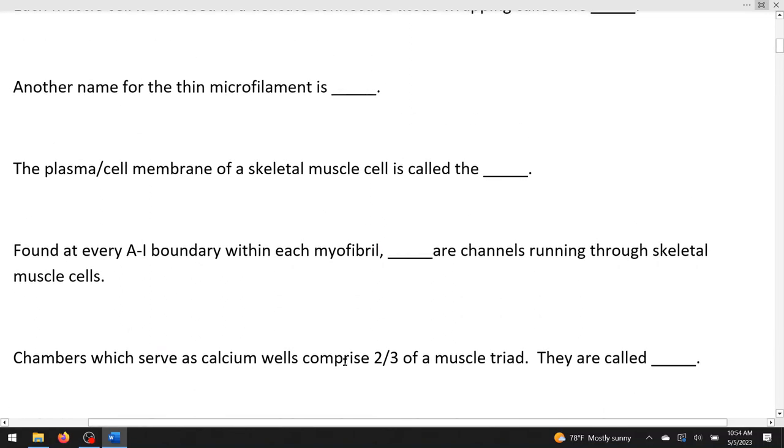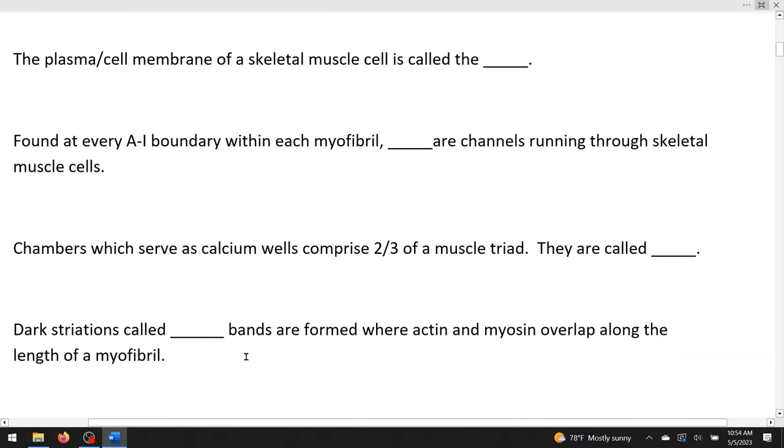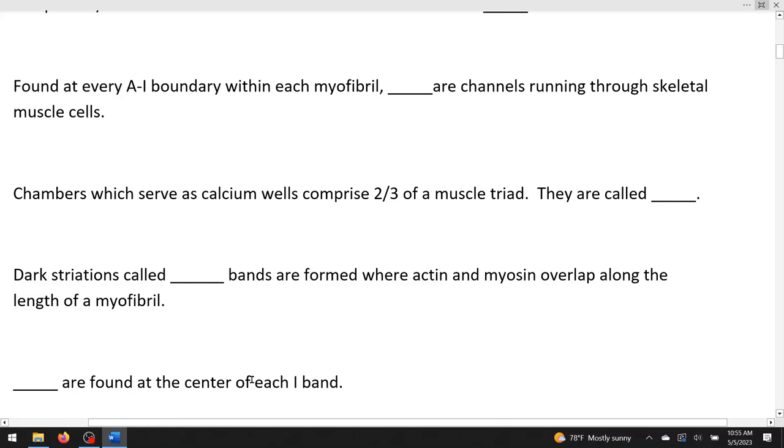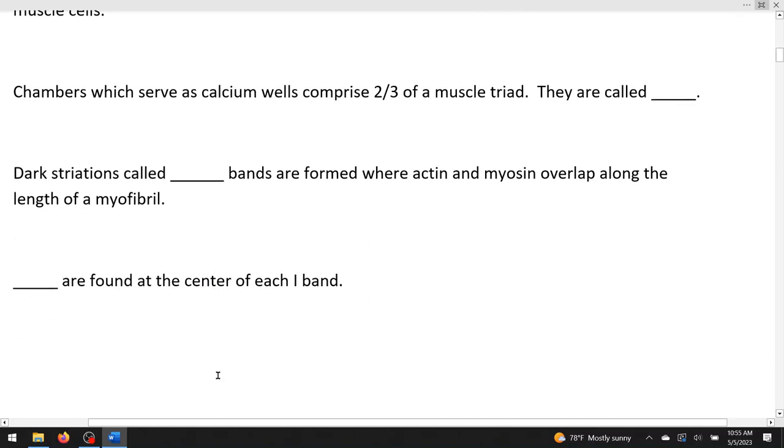Chambers which serve as calcium wells comprise two-thirds of a muscle triad. So what are the parts of a triad? Well, it's going to be these T-tubes we just talked about in this question, plus the two cisternae that are on either side. Those are where we find the calcium stored. So the two-thirds of the triad that store calcium are cisternae. Dark striations called blank bands are formed where actin and myosin overlap along the length of a myofibril. Dark band, because it's got the letter A here, is simply the answer. A bands usually put a capital letter A there. The light bands are called I bands for the same reason. Blank are found at the center of each I band. So what's in the I band? Probably the best answer for at the center would be actin, but you could make an argument that you also find titin, the molecule titin there also.